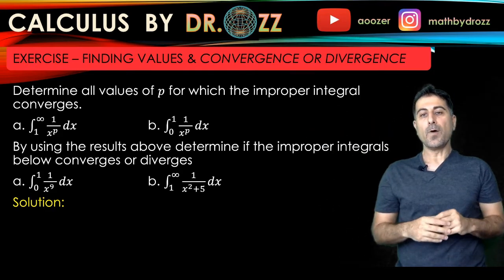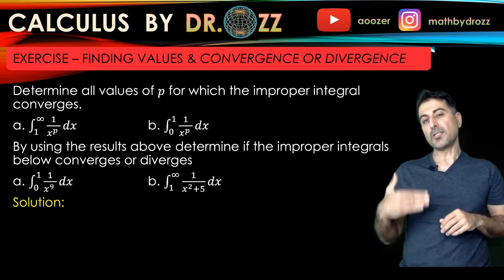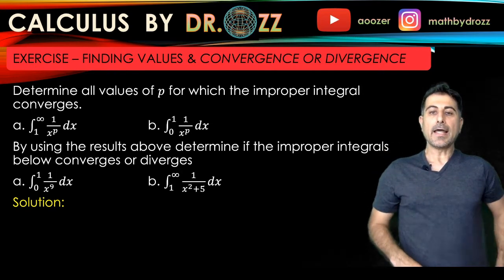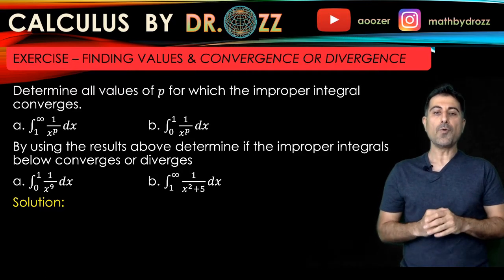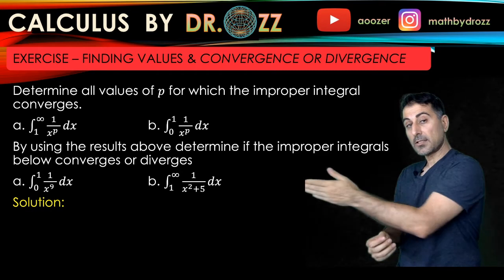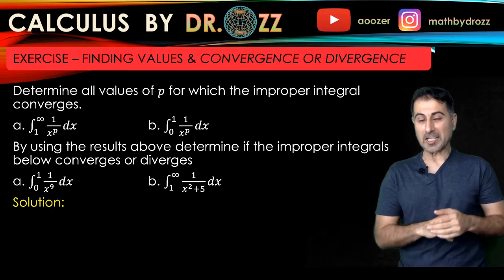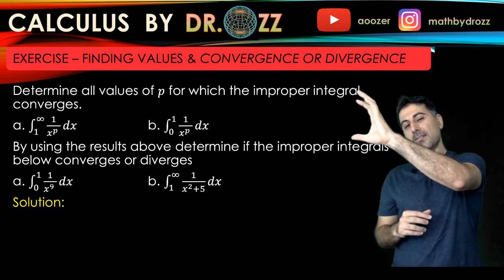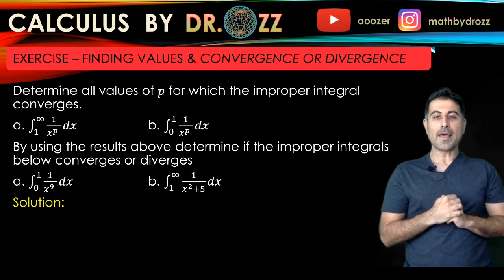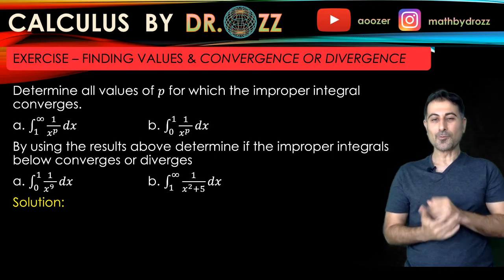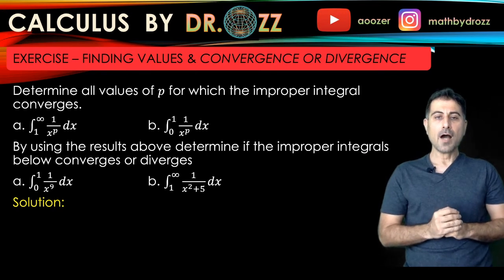We have two kinds. One is the integral from 1 to infinity of 1 over x to the p dx, and another is the integral from 0 to 1 of 1 over x to the p dx. By using the results from part A and part B, we are going to evaluate additional integrals where there is no p involved. There is a longer analysis to understand what's going on in terms of p, and we'll apply those results toward those integrals. So let's get started.